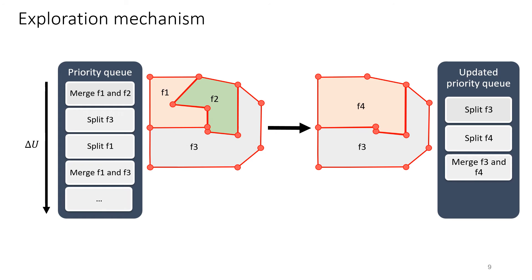Our exploration mechanism iteratively updates the polygonal partition using merge and split operators, maintained by a priority queue. The priority queue assigns highest priority to the operation which decreases the energy the most.